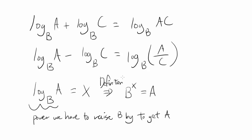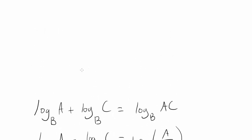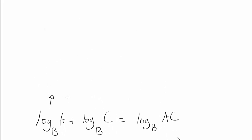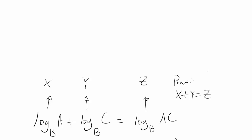So logarithm is the inverse of exponentiation. Now let's get to proving this. For the first one, log base B of A plus log base B of C is log base B of A times C. Let's let log base B of A be X, and log base B of C be Y, and log base B of AC be Z. So if we can prove X plus Y is equal to Z, we are done.